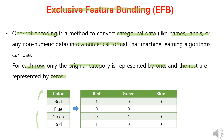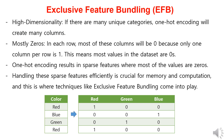For example, if we represent categorical data indicating colors using one-hot encoding with three classes — red, blue, and green — red can be represented as 1, 0, 0; blue as 0, 0, 1; and green as 0, 1, 0. One-hot encoding is a very useful method for categorical data, but it represents only the relevant class as 1 and the others as 0. As the number of classes increases, the number of columns increases, leading to higher dimensionality. When most feature values are 0, they are called sparse features. One-hot encoding generates these sparse features, and handling them efficiently is crucial for memory and computation. This is where techniques like Exclusive Feature Bundling come into play.